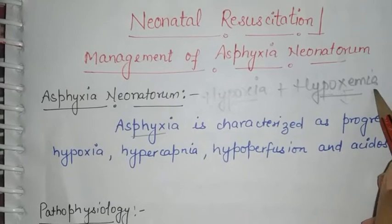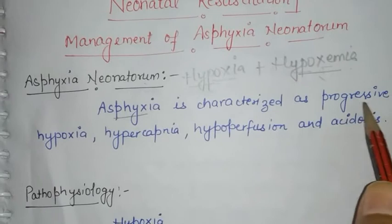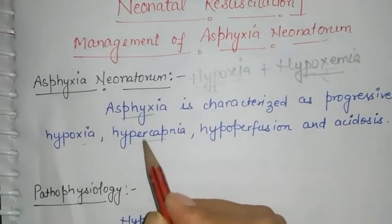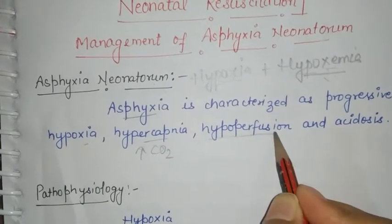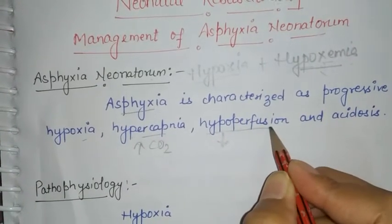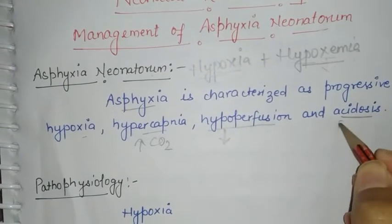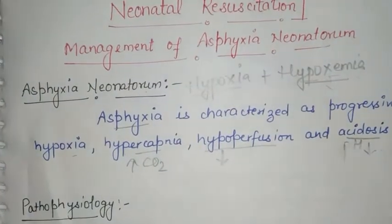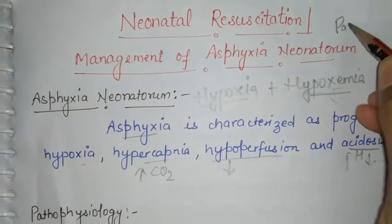Asphyxia neonatorum is characterized by progressive hypoxia, hypercapnia — which means increased carbon dioxide levels — hypoperfusion due to decreased oxygen leading to decreased perfusion between cells, and acidosis, meaning the pH is going to decrease.